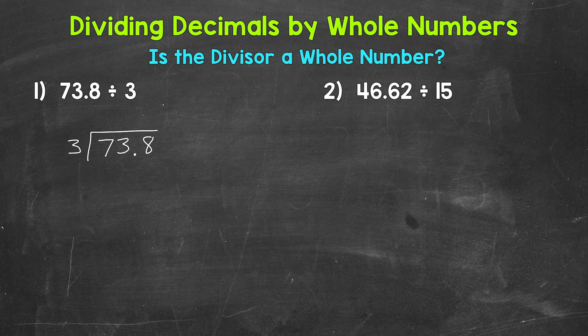Whenever we have a division problem that involves decimals, we always need to check: is the divisor a whole number? If yes, bring the decimal straight up into the answer. For number 1, our divisor is 3 — that's a whole number — so we bring the decimal straight up into the answer.